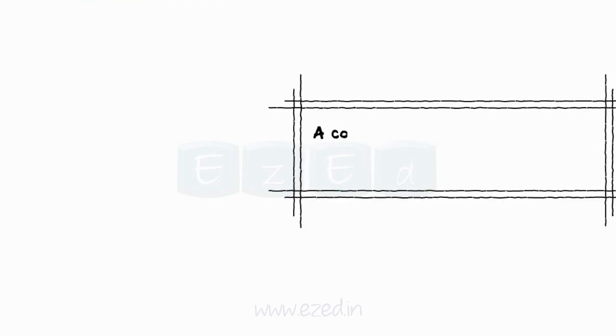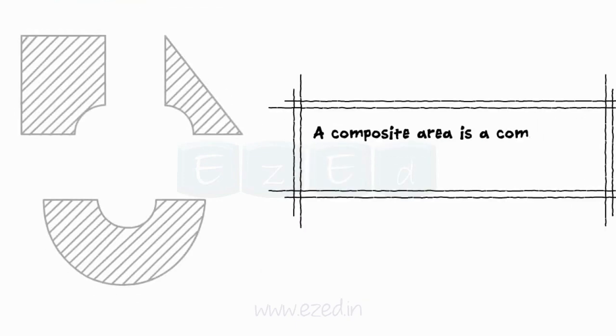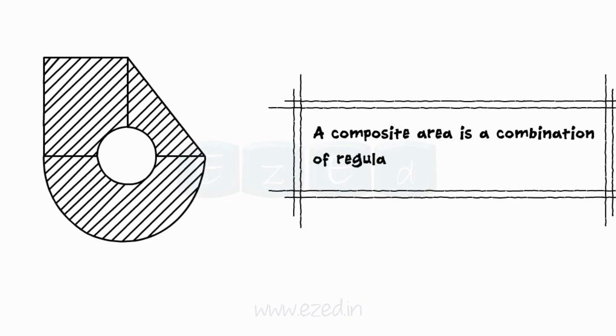A composite area is a combination of regular plane areas. To find the moment of inertia of a composite figure about any axis, we use the following steps.